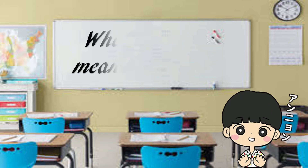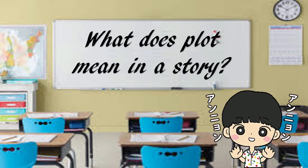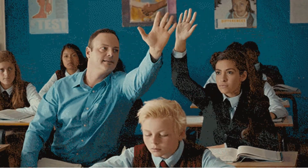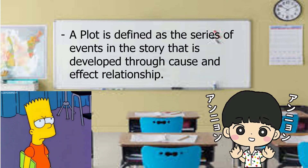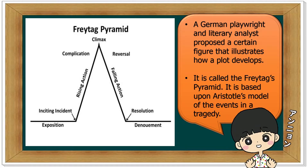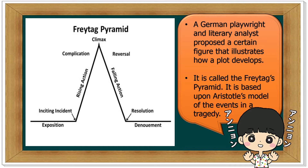What does plot mean in a story? A plot is defined as the series of events in the story that is developed through a cause-and-effect relationship. A German playwright and literary analyst proposed a figure that illustrates how a plot develops, called Freytag's Pyramid. It is based upon Aristotle's model of the events in any tragedy.